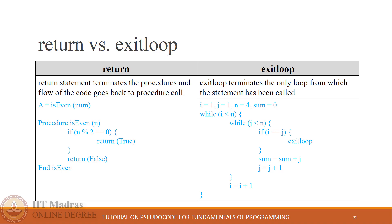The last part of this tutorial covers the difference between return and exit loop statements. These two may look similar but there is a critical difference. The return statement must be used in a procedure, whereas exit loop can be used in any loop, which may or may not be in a procedure. The return statement terminates procedure execution and control goes back to the procedure call, whereas exit loop terminates only the loop from which it was called, and the rest of the code continues executing.